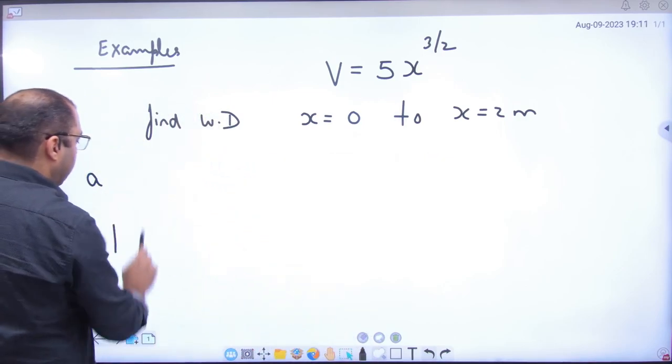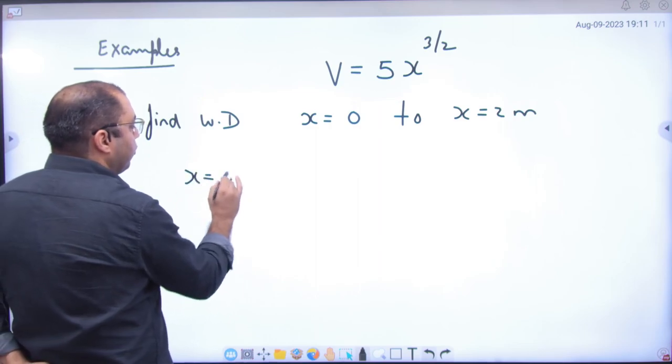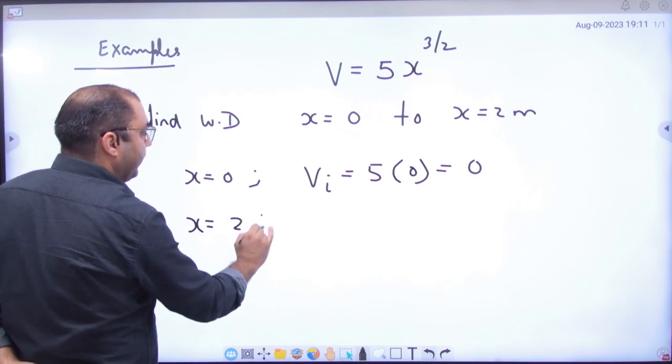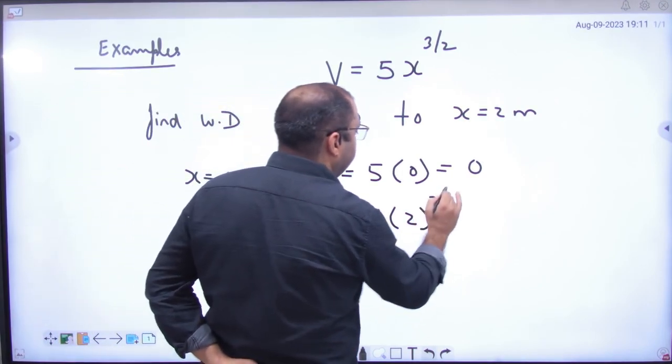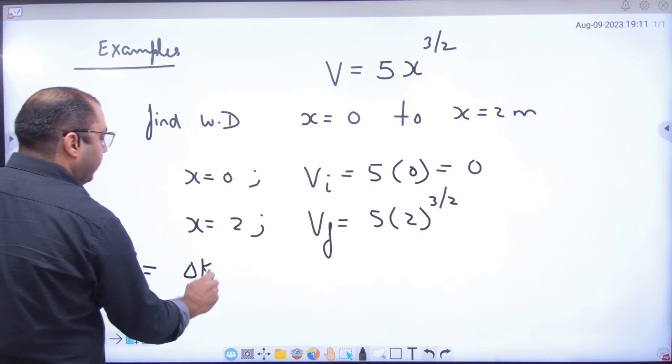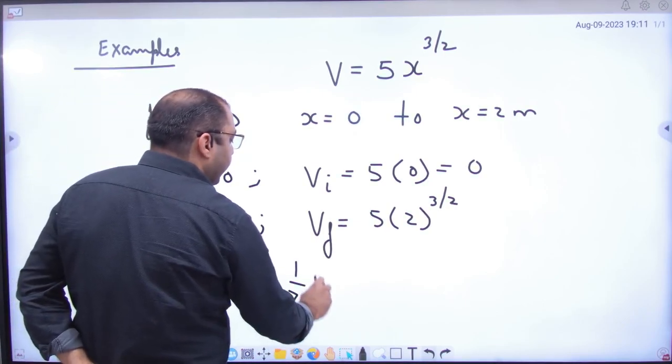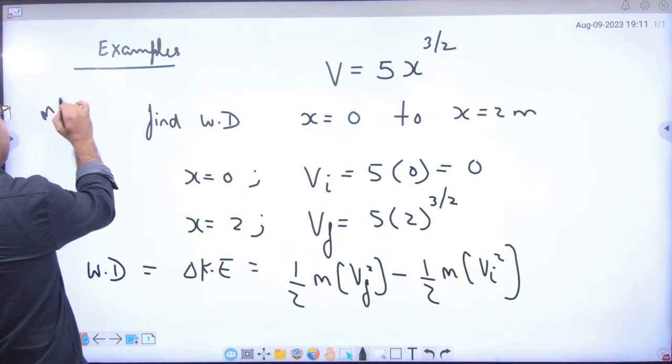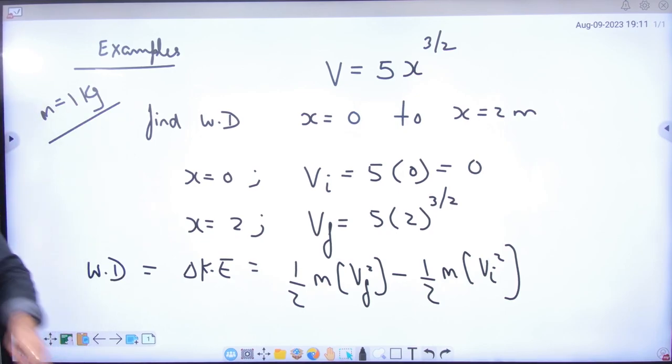You simply do one work. When x's value is 0, then the initial velocity is 5 into 0, which is 0. When x's value is 2 meter, then the final velocity is 5 into 2 raised to power 3 by 2. Now according to work energy theorem, amount of work done by net force is change in kinetic energy. Half into body mass into final velocity square minus half into body mass into initial velocity square. Initial velocity knows and final velocity knows and mass knows, so change in kinetic energy equals work done.